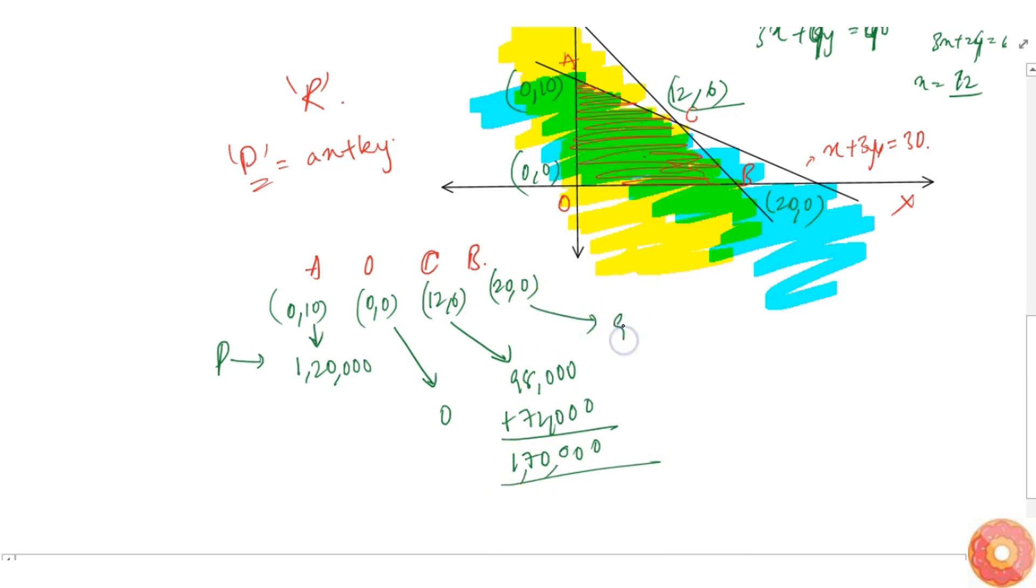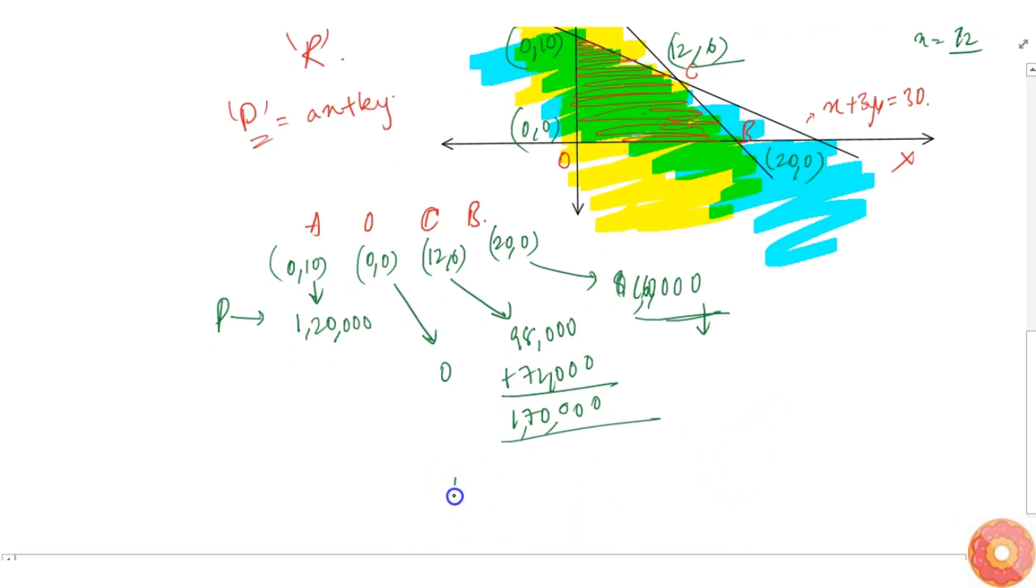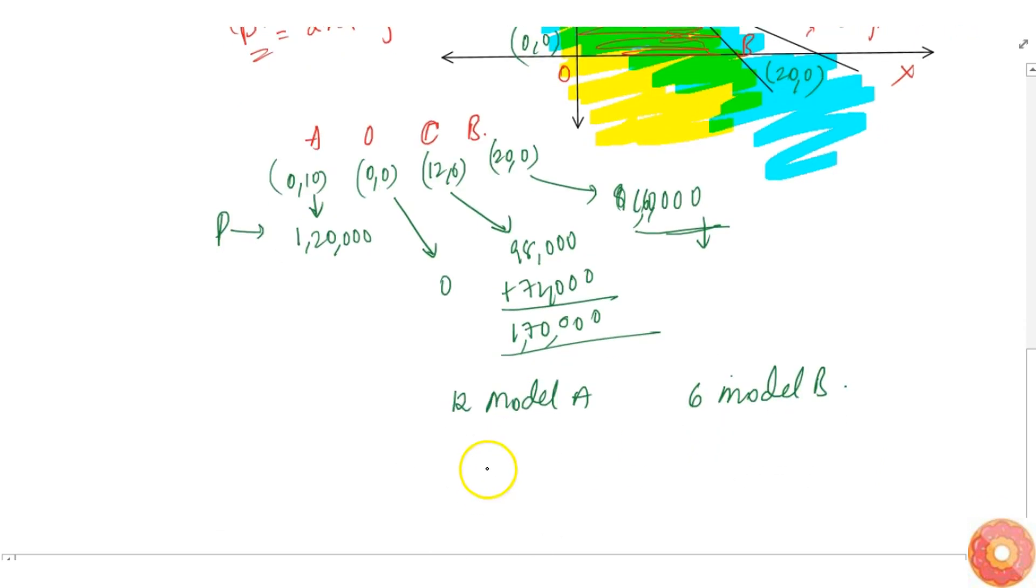And at this point it's simply 9 is 16,000 sorry 1 lakh 60,000. 20 into 8 sorry 20 into 8 yeah 1 lakh 60,000. So as you can see the highest is at C that is 12 comma 6 so we need to make 12 model so 12 model A and 6 model B. So when we make 12 model A pieces and 6 model B pieces we get the maximum profit of 1 lakh 70,000.